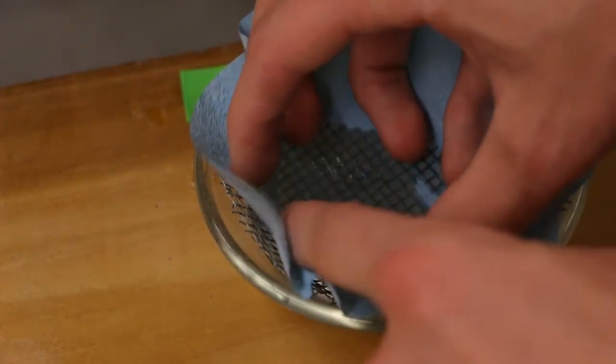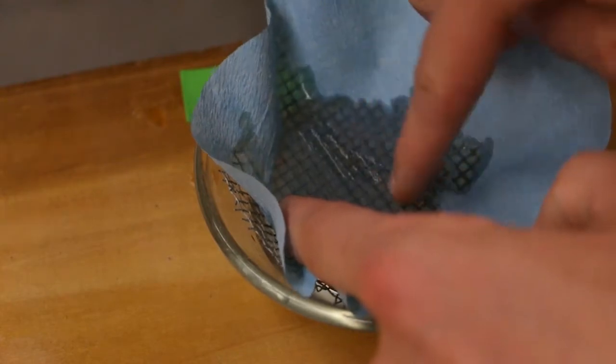When adding the filter paper, be sure there are no air bubbles or creases. The nematodes will have to crawl through this, but you don't want any loose soil getting through.